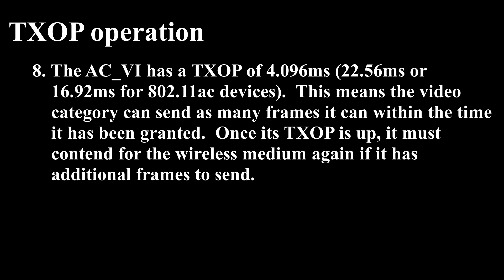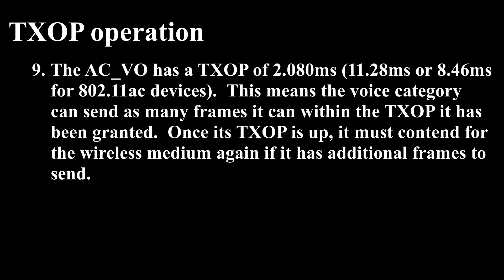The ACVI has a TXOP of 4.096 milliseconds, 22.56 milliseconds, or 16.92 milliseconds for 802.11ac devices. This means the video category can send as many frames as it can within the time it has been granted. Once its TXOP is up, it must contend for the wireless medium again if it has additional frames to send.